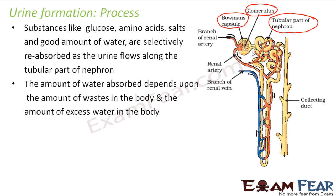The amount of water absorbed depends on the amount of wastes in the body and the amount of excess water in the body. As this blood passes through the tubule, water absorption depends on how much excess water and waste is present. By the time the filtrate reaches the collecting duct, we are left with urine. Inside the kidney, many nephrons each produce urine from their collecting ducts, and all this urine combines to form the kidney's total output.